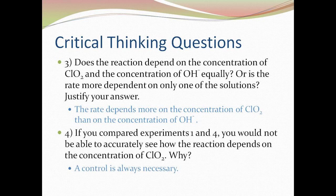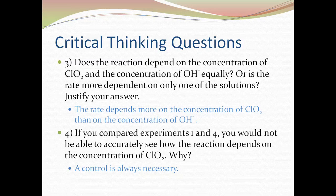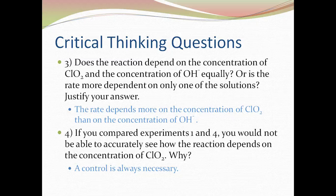Number 4. The answer is that you always need a control. One of the concentrations needs to remain constant. In experiments 1 and 4, both the concentration of ClO2 and OH- change, so they're not the most appropriate experiments to use to determine how the reaction depends on the concentration of ClO2.